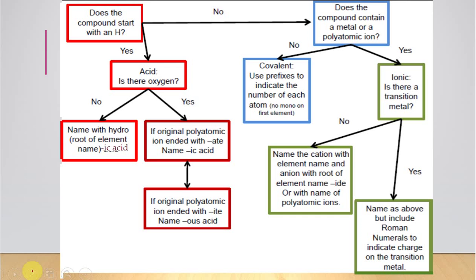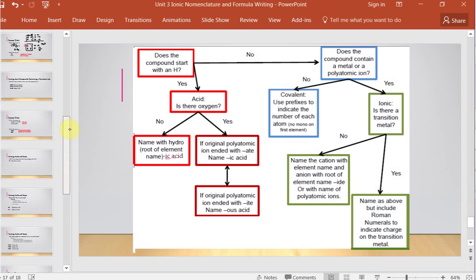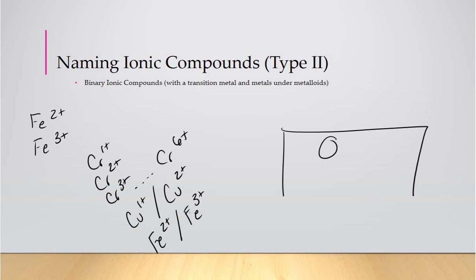If you're going into the medical field — pharmacy school or nursing — the old Guyton nomenclature system using ferrous and ferric (using endings to indicate charge) is still sometimes used in those fields. But in this course we'll stick to straight IUPAC: state the charge by Roman numeral. Just be aware you may encounter the older system in your field.